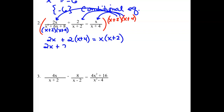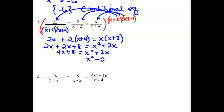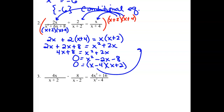Distributing to get rid of our parentheses, then combining like terms, we have 4x plus 8 equaling x squared plus 2x. Moving everything to the side with x squared so we can use factoring, subtracting 4x leaves negative 2x, and subtracting the 8 leaves negative 8. Looking at that in factored form, we have x minus 4 and x plus 2, so our possible solutions are x equals 4 or x equals negative 2.